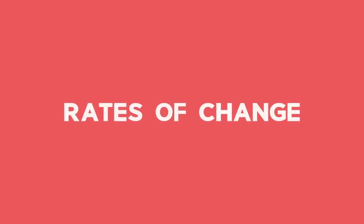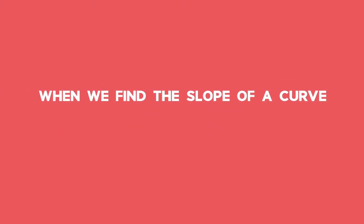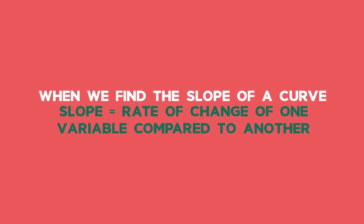Rates of change. When we find the slope of a curve, we're finding the rate of change of one variable compared to another.